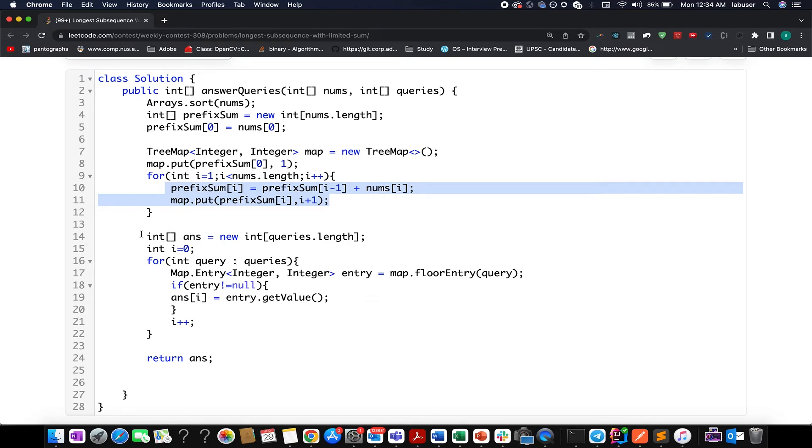Moving ahead at line number 14 I've created the answer array equal to the number of elements in queries dot length. We iterate over each query, extract the corresponding floor entry with respect to that query, and if that entry is not equal to null we extract its corresponding value, which gives us the number of elements used to achieve that sum. With each iteration we increment the i pointer and in the end return the answer.